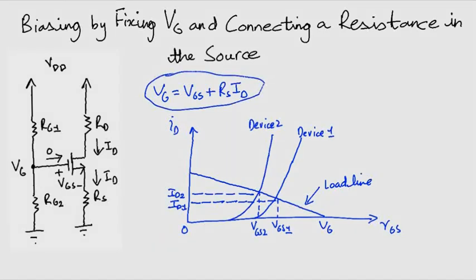In the previous case, there was no such constraint. The device operates on the load line. Therefore, the values of ID2 and ID1 are quite close to each other.